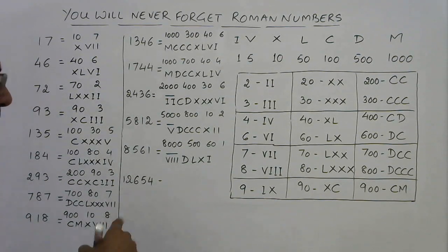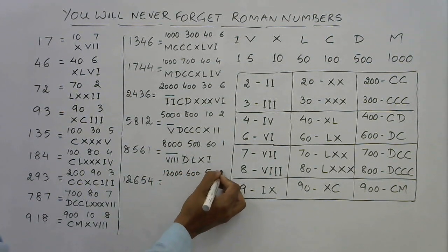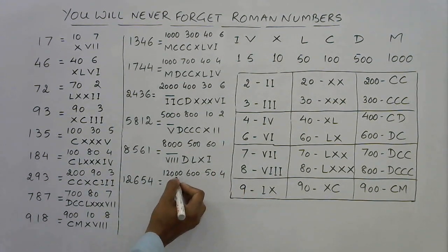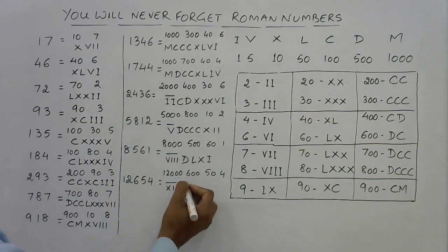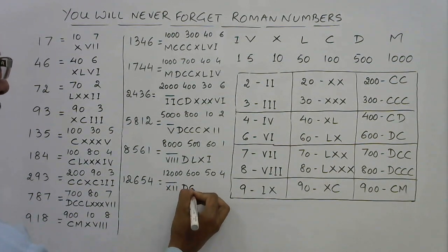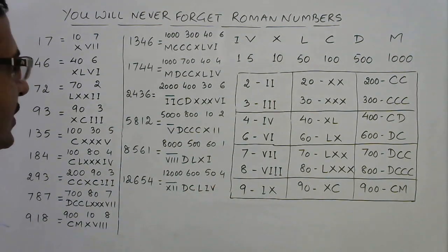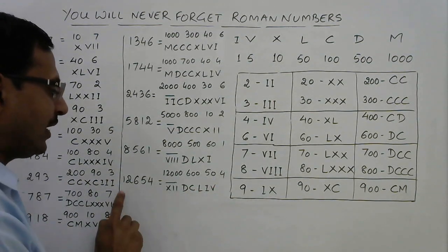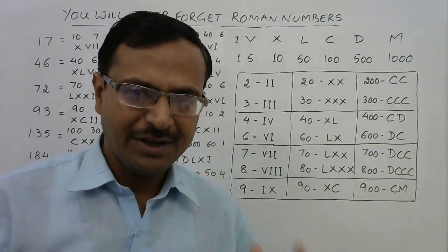For 12,654: 12000 requires writing 12 with a bar (XI̅I), since 12 × 1000 = 12000. Twelve is XII, so XII̅. Then 600 is DC, 50 is L, and 4 is IV — giving XII̅DCLIV.